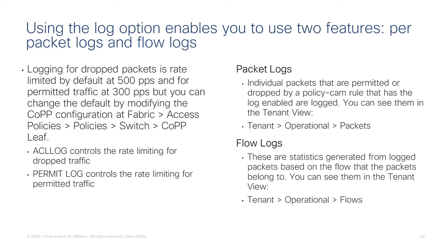Flow logs are particularly useful. Flow logs are basically statistics — ACI takes all the packets sent to the CPU and builds a kind of spreadsheet, keeping statistics of which entries are being hit by the logged packets. This is based only on packets forwarded to the CPU, not all traffic flowing through the fabric. So this number is not accurate for measuring total traffic volume, but it is useful to find out if an entry is being hit and by which kind of packets.